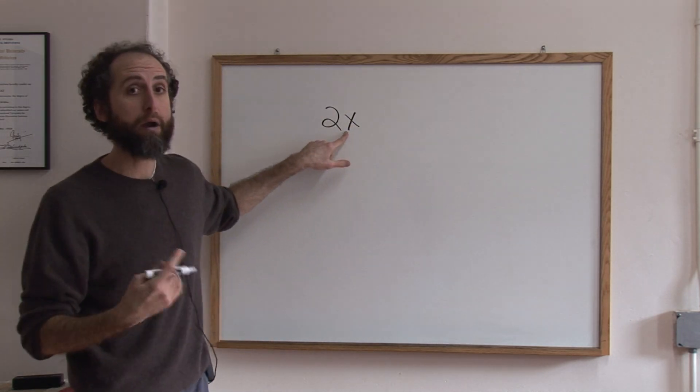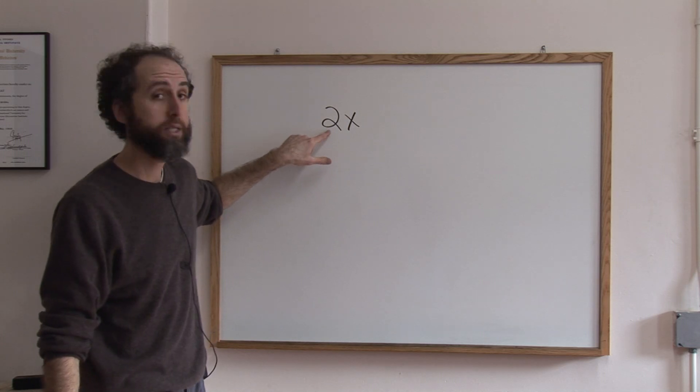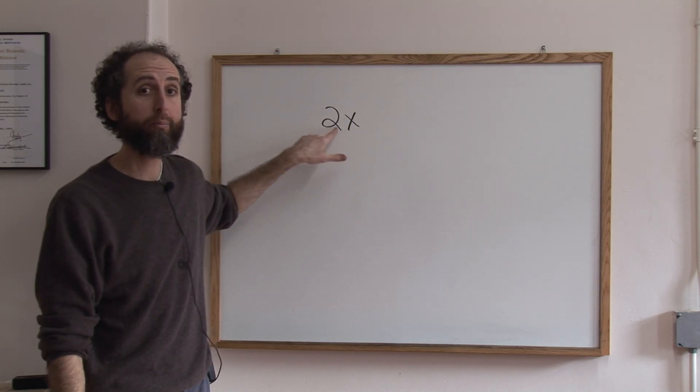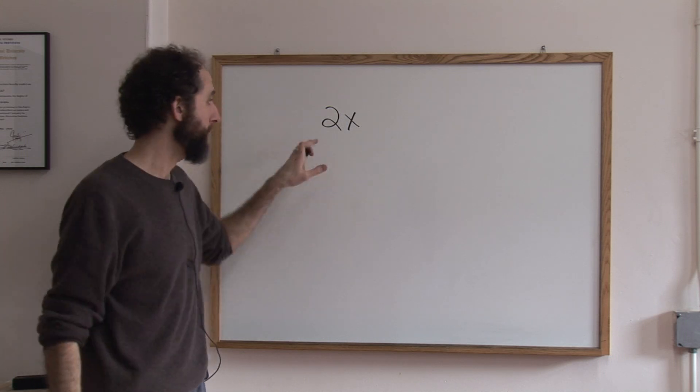So x is a variable which represents any number, and double it means times it by two. So take a number and double it. That's something you could have done before you ever heard the word algebra, and yet that's algebra.